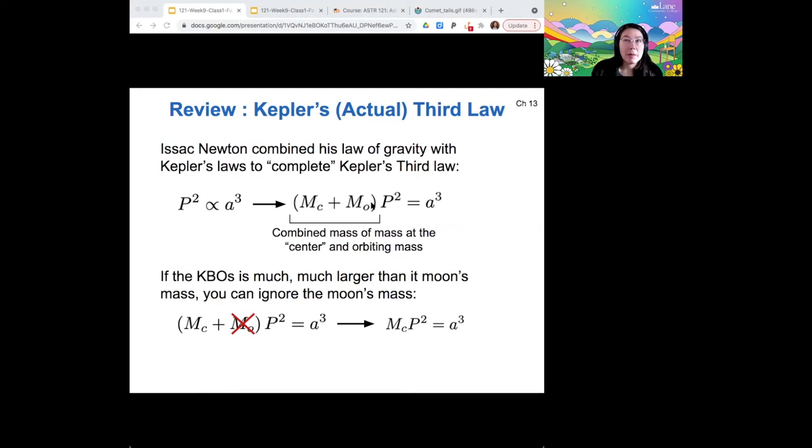So if you look at the Kuiper Belt objects, the KBO orbits around the sun, the mass that you would be calculating would be the mass of the sun. Remember when we did the mass of Saturn lab, we were looking at the orbit of Titan, but that gave us the mass of Saturn. And so for that reason, if you want to measure the mass of the Kuiper Belt object, then you have to measure the mass of its moon. That is the best way to get a KBO's mass.